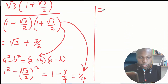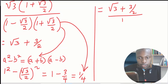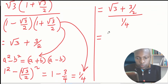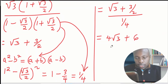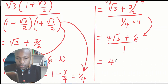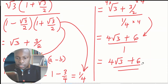So the numerator is root 3 plus 3 over 2, and the denominator is a quarter. To simplify, we multiply each term by 4 to get rid of the fractions. Root 3 times 4 gives 4 root 3, and 3 over 2 times 4 gives 6. The denominator 1 over 4 times 4 gives 1. Therefore, the expression simplifies to 4 root 3 plus 6.